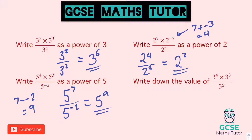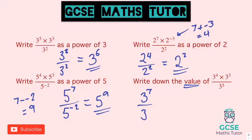And the final one says write down the value. So this time we're not going to have it as a power — we're going to see what we get. On the top: three to the power of four times three to the power of three — adding those together gives us three to the power of seven. And we're dividing that by three to the power of five — dividing, so we subtract them — and we get three squared.